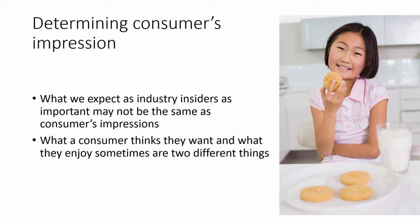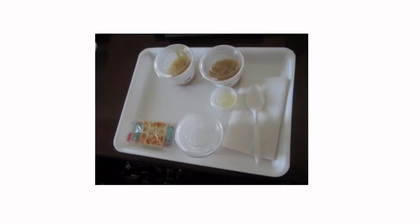What we as industry insiders deem important may not match consumer impressions, so think about what is actually important and whether you're recruiting the right population. Also note that attribute lists can prompt people to think they want something they don't actually enjoy. Think of wine labels using attributes to sell — 'luscious notes of blackberry and banana' — giving people a vocabulary that prompts them to look for things they wouldn't otherwise notice. Make sure you're not prompting participants toward desirable-sounding attributes that aren't necessarily present.